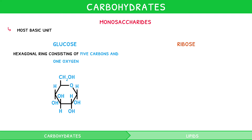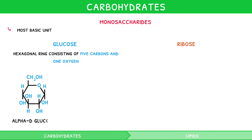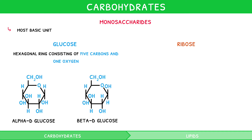Glucose comes in two forms, alpha-D glucose and beta-D glucose. The difference between these two is that in beta-D glucose, the rightmost carbon's hydrogen and hydroxyl groups are flipped.